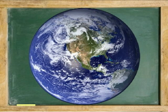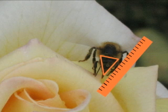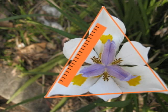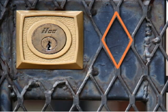We begin geometry with a definition. Geometry means to measure the earth, which in practical terms means to measure the physical environment that's around us, or any environment we may want to build.